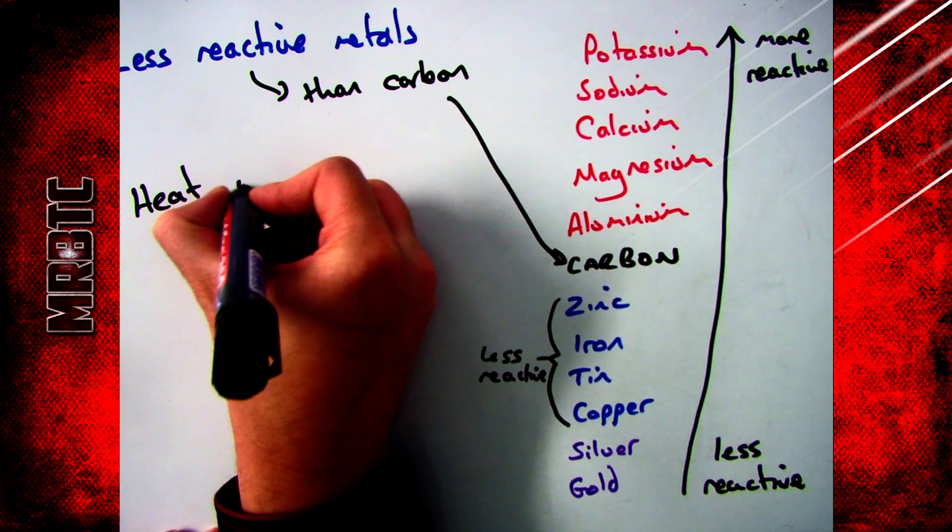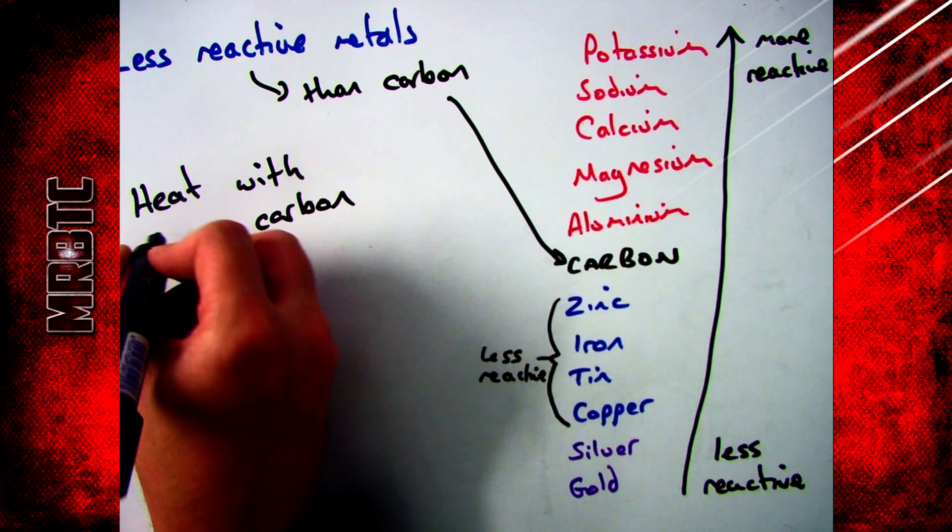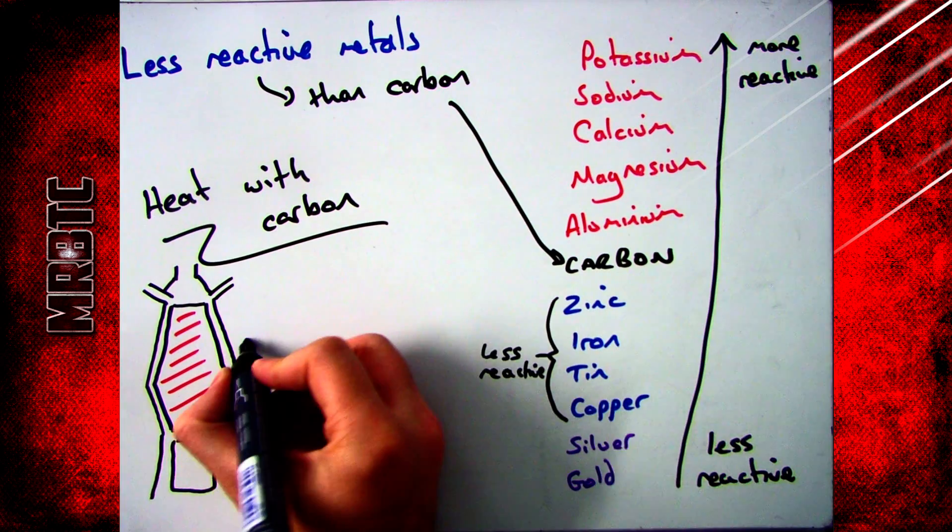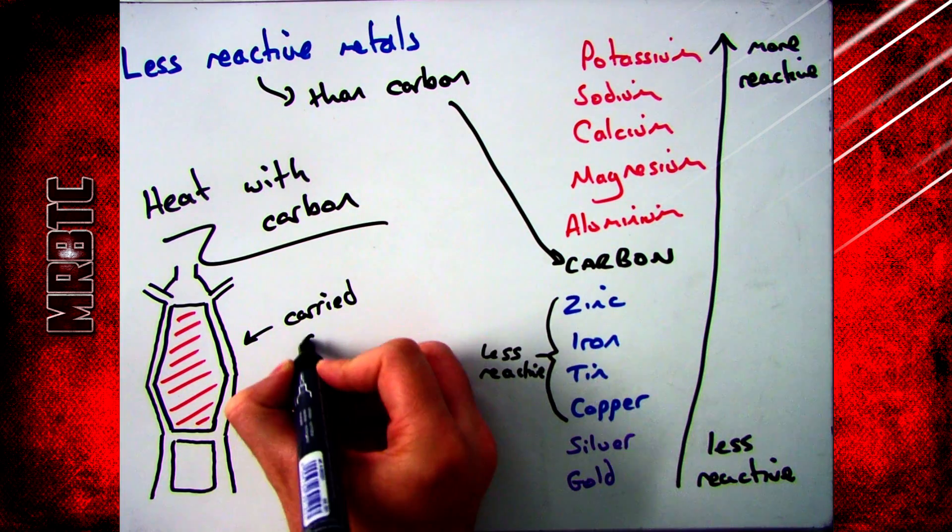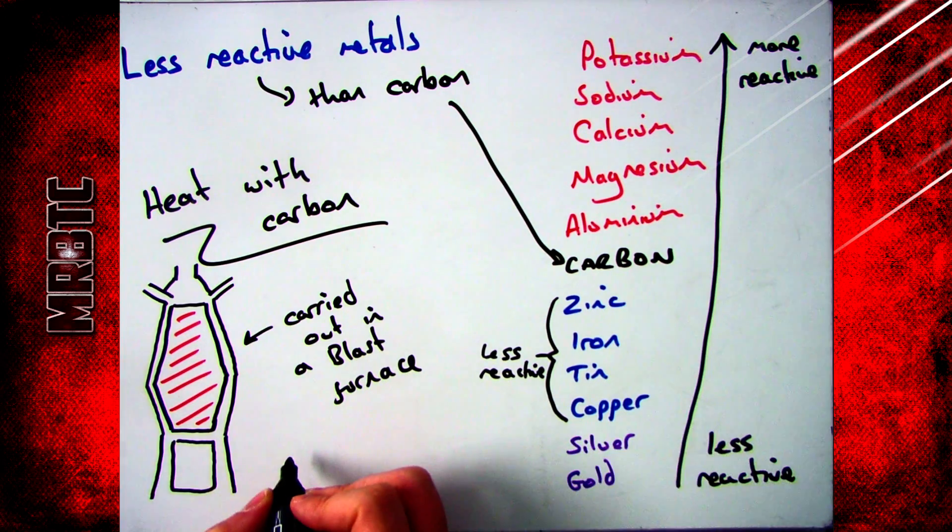What you need to do if you get a metal that is less reactive than carbon, that isn't silver or gold, is to heat it with carbon and that will help to extract it. This is done in a blast furnace. All you need to be able to say is you heat it with carbon in a blast furnace.